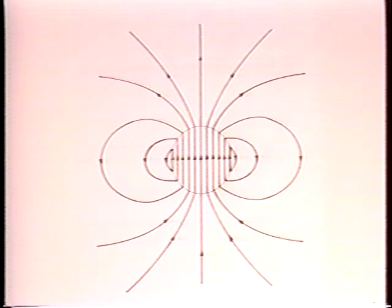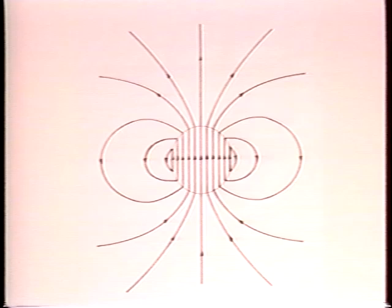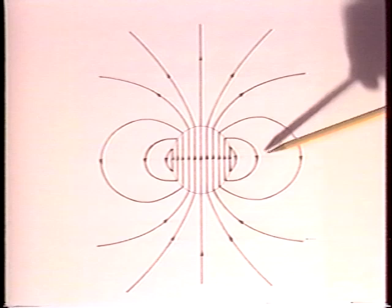The magnetic field that results from this surface current density looks like this. Inside the sphere it should be essentially uniform. Outside, it should be the same as would be produced by a magnetic dipole located here at the center of the sphere.